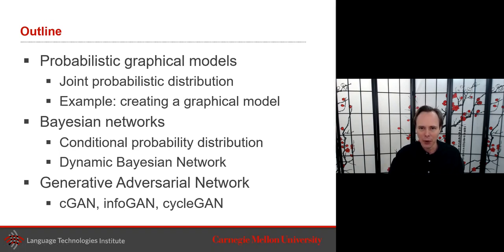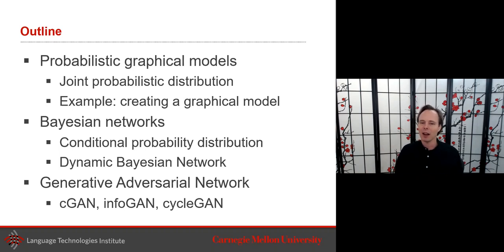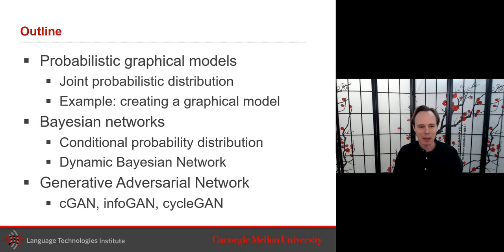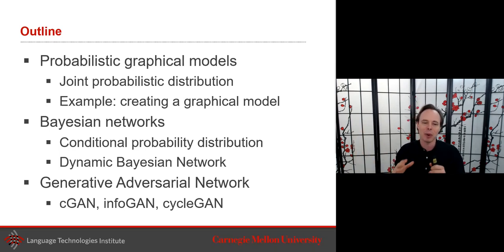Next week we'll go further into discriminative graphical models like conditional random fields and energy models. Staying in the generative space, I'll also talk about generative adversarial networks as a neural approach. The way we use the word 'generative' in that context is slightly different from the classical machine learning meaning, but it keeps a lot of the same philosophical view on generating data.